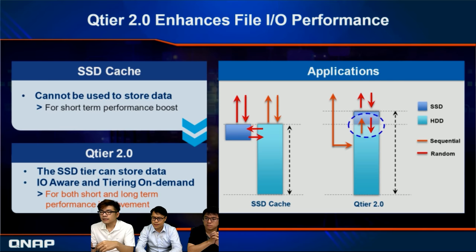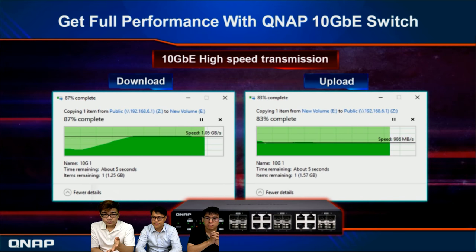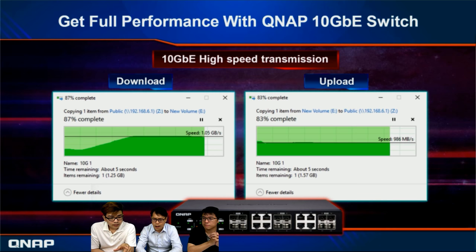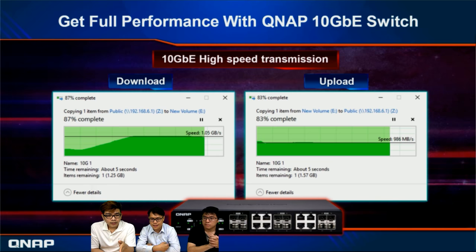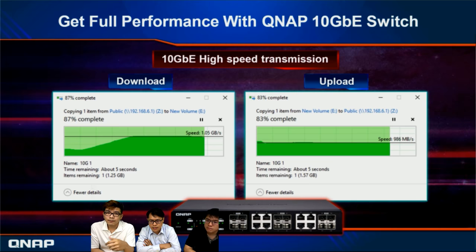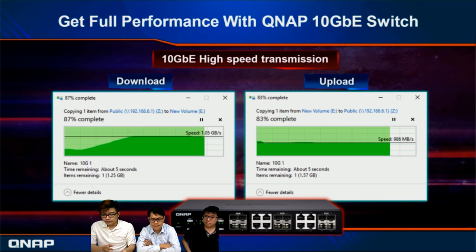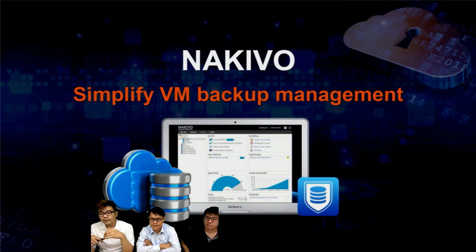With QTier, you can use the SSD not only as cache but also utilize the full storage capacity of your SSD — that's the advantage of this exclusive function. Regarding 10G switch performance, you can see from the download chart that both files of 1.5 GB and 1.57 GB complete in around one second — that is the speed QNAP can bring you.